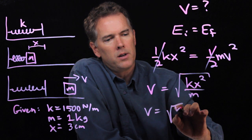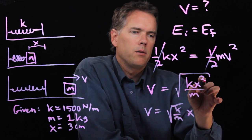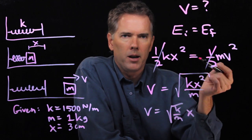V is square root k over m times x, right? When I have x squared and I take the square root, I can pull it out.